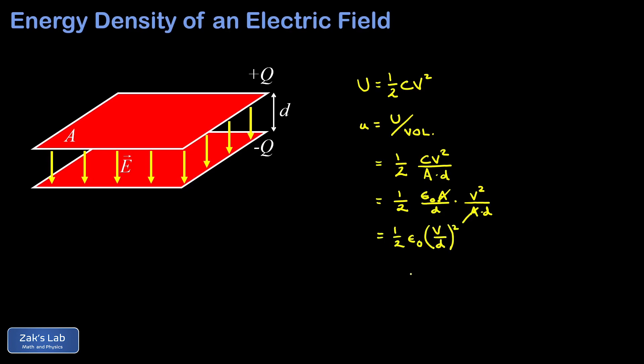But then we recall that the potential difference V between the plates of a parallel plate capacitor is just given by the electric field strength E multiplied by d, and that's really just because the potential integral becomes trivial when E is a constant.